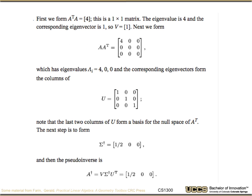Okay, so to form this, the first thing we do is we do A transpose A, which in this case is just a dot product. We get the answer 4, which is a 1 by 1 matrix. The eigenvalue for this is 4, and the corresponding eigenvector is just the number 1. So V transpose is 1.